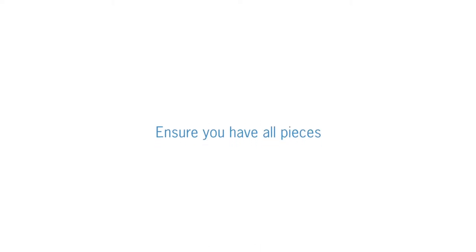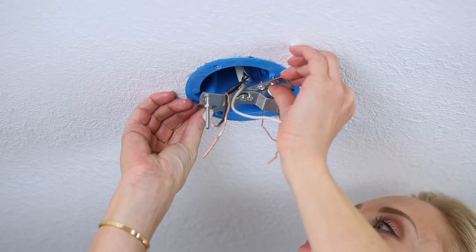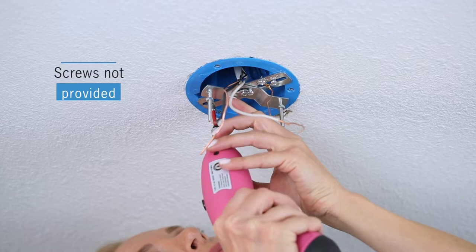Unbox the product and ensure that you have the instructions and are not missing any pieces. Attach mounting bracket to ceiling electrical box. Screws are not provided.